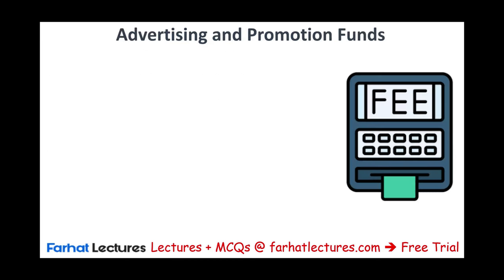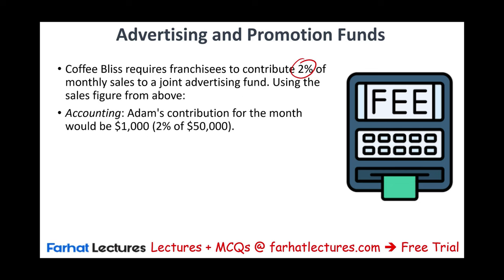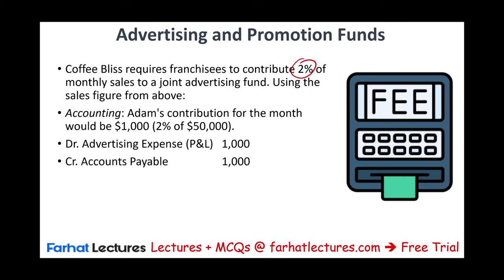Adam might also have to pay for advertising. Coffee Bliss requires franchisees to contribute 2% of monthly sales to the advertising fund. Based on $50,000 in sales, Adam will have to put away $1,000. He debits advertising expense $1,000 and credits accounts payable $1,000. If Adam is prepaying for several months, it would be recorded as prepaid.